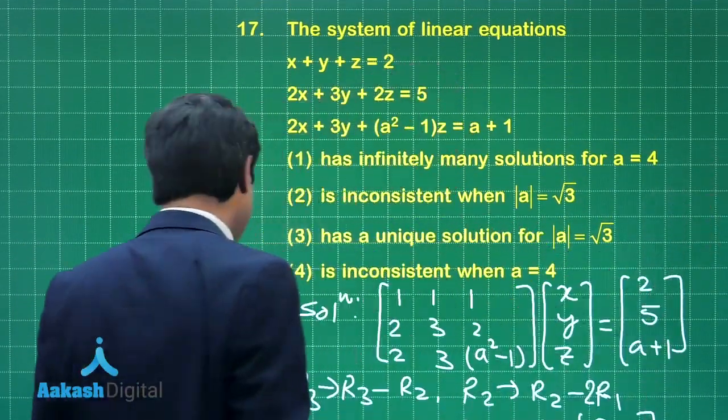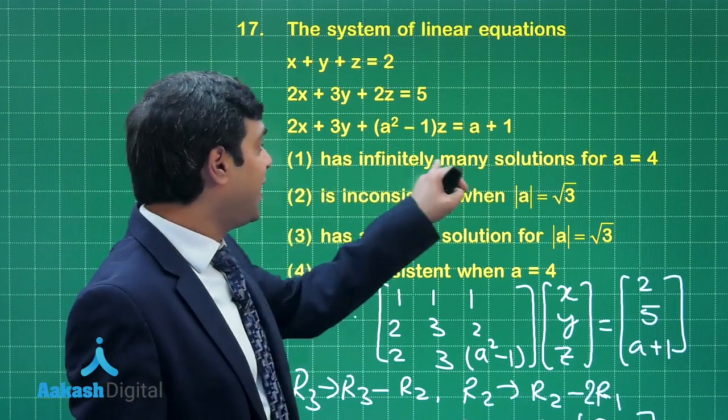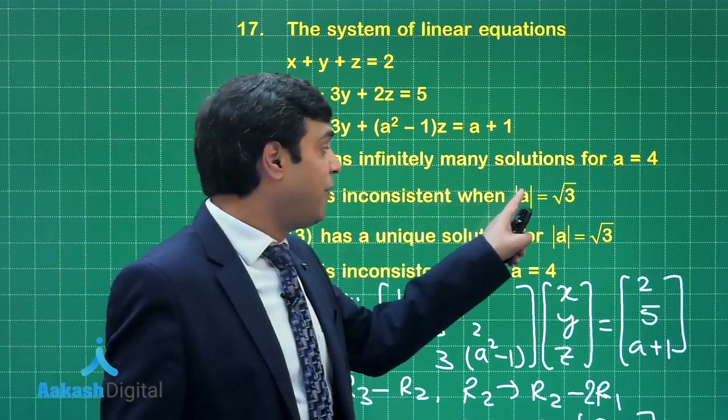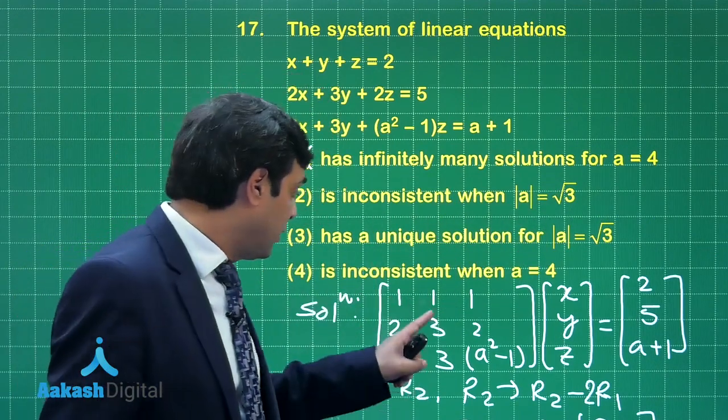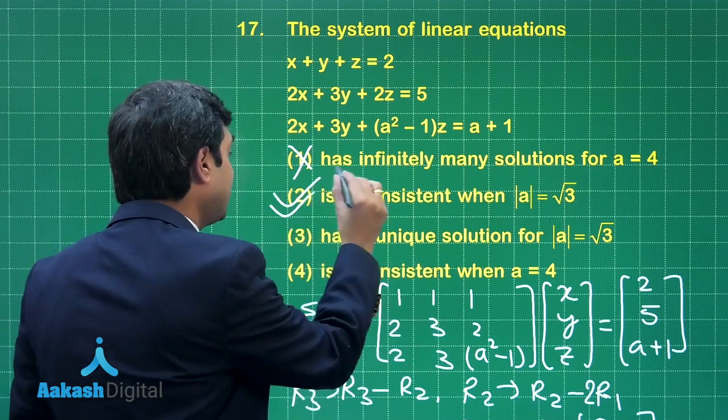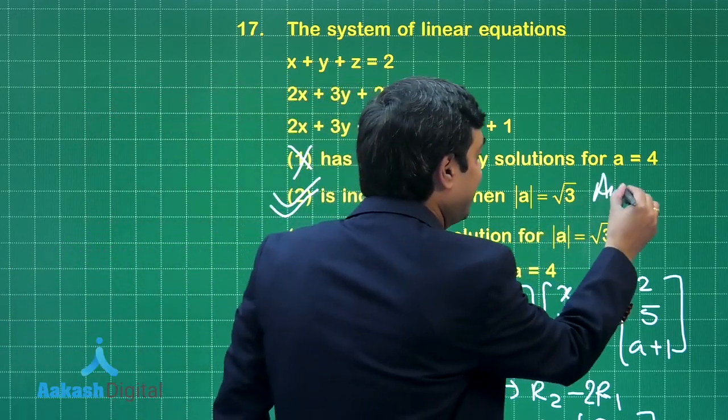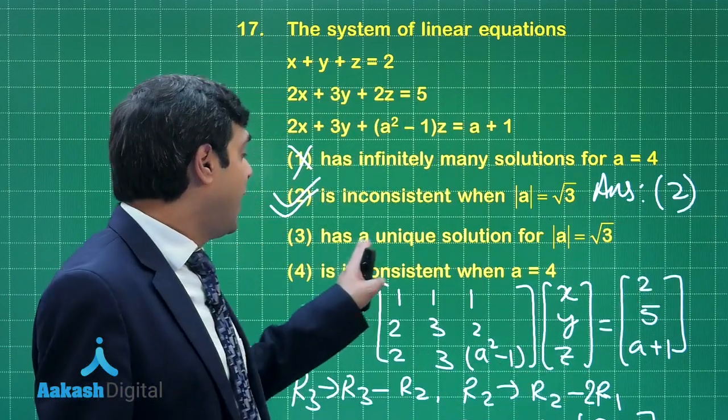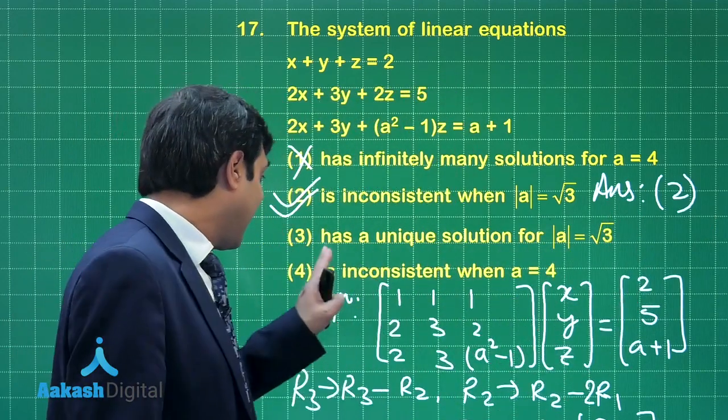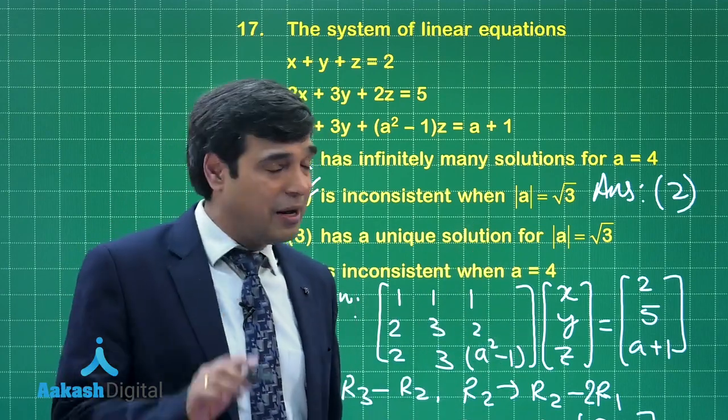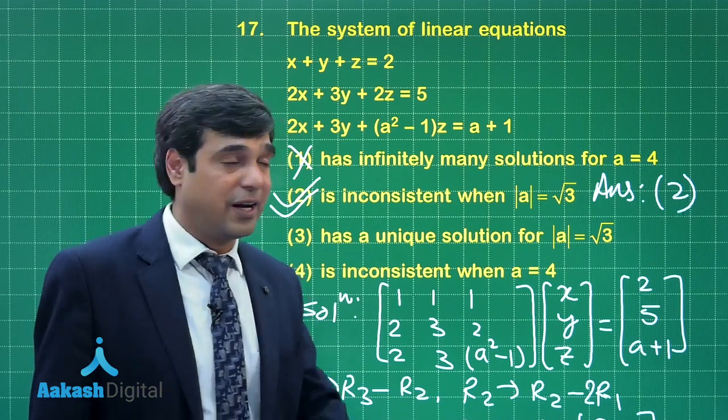Now look at the given options. Which one is correct? Has infinitely many solutions—no. Is inconsistent when a²-3 is 0—it is having no solution, this is inconsistent, this option is correct. Has a unique solution—no, is inconsistent—no, because it has unique solution for a=4. I'm sure this question is clear. Let us move on to the next one.